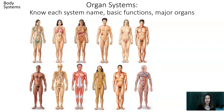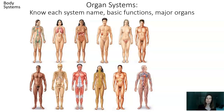Let's review all the different organ systems in the body. This is not technically a focus of the AP Biology exam, but if you're learning biology you really should know a bit about who you are and what you're made of. I'm going to ask that you learn each system's name, the basic functions, and the major organs. Take a moment to figure out what each of these pictures is representing, starting at the top row left to right, then the bottom row left to right.